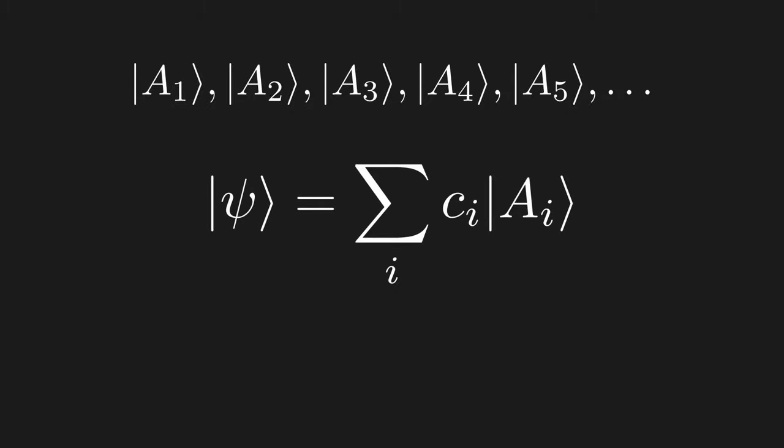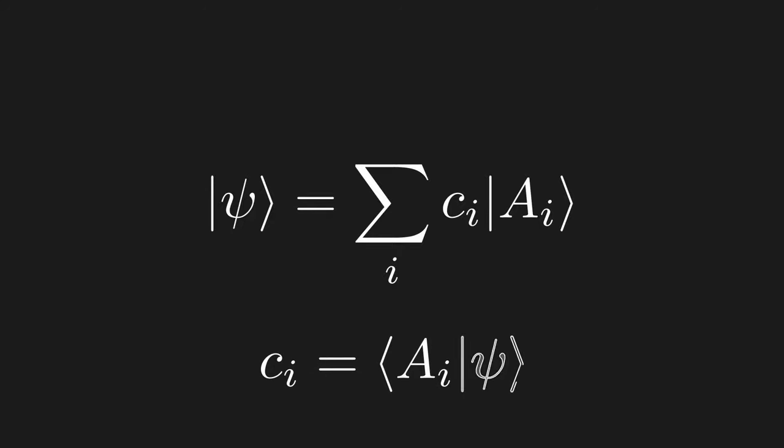To really show you the power of bra-ket notation, I want to run through a quick example. Let's say we have an orthonormal basis in our vector space, and we expand an arbitrary quantum state in this orthonormal basis. Remember from chapter 4 that because all the states are orthonormal, we can calculate the coefficients as follows. It's also really easy to prove this yourself.